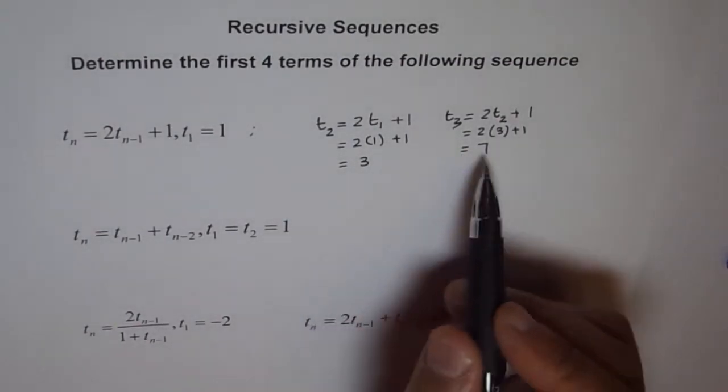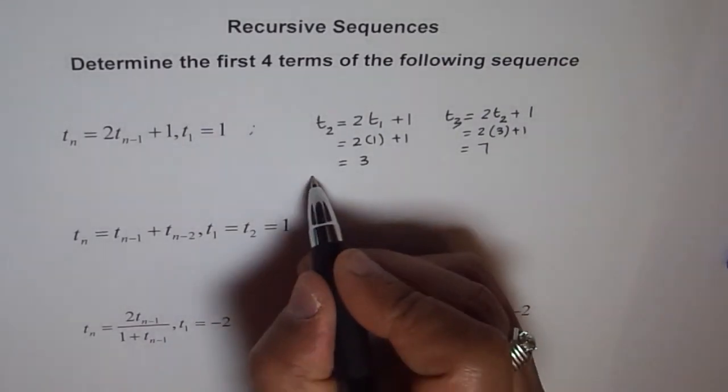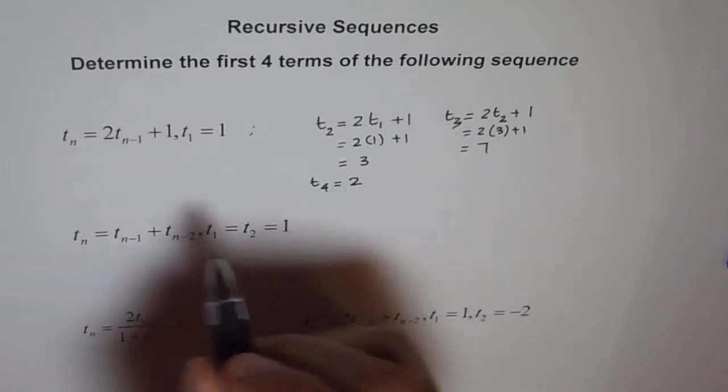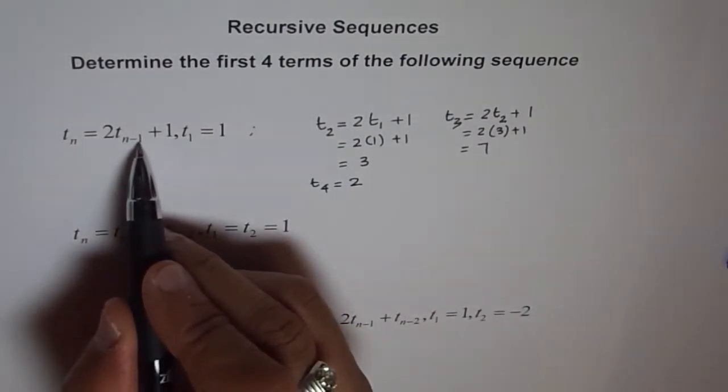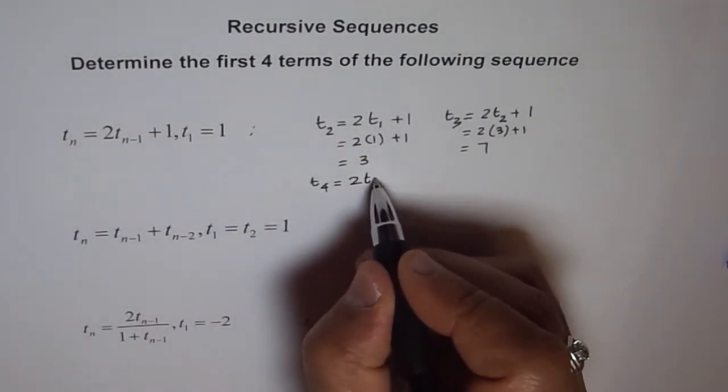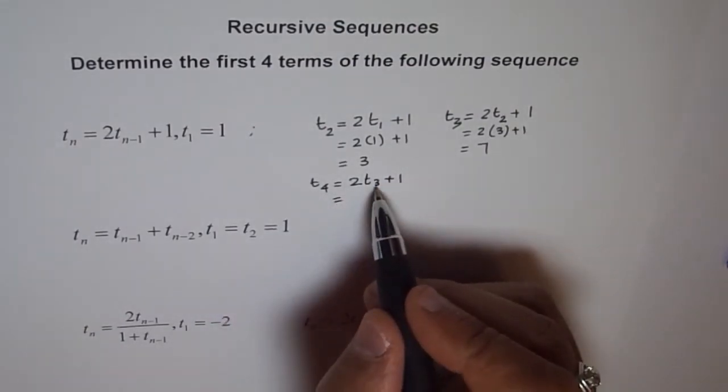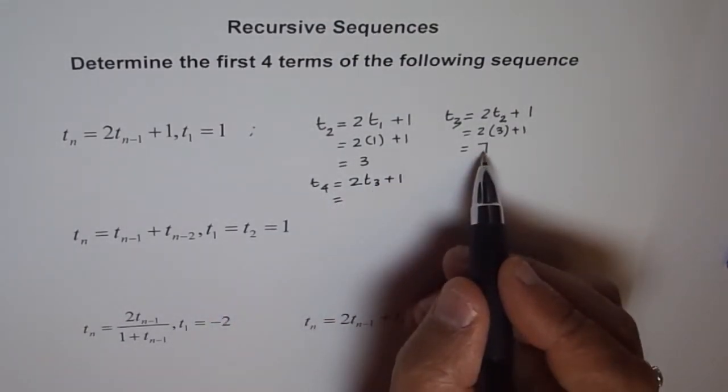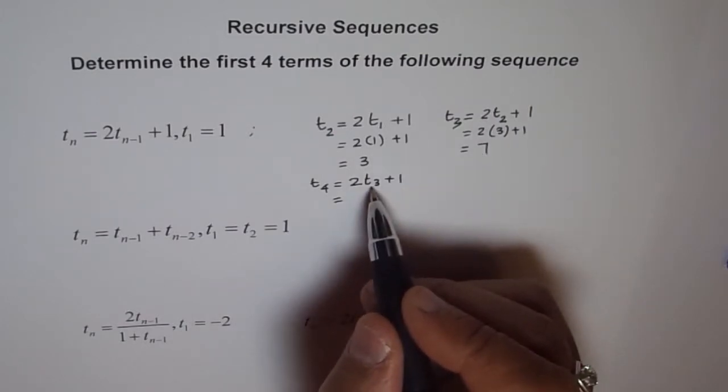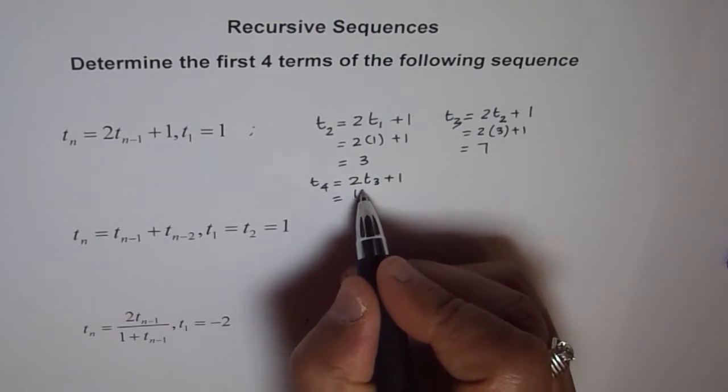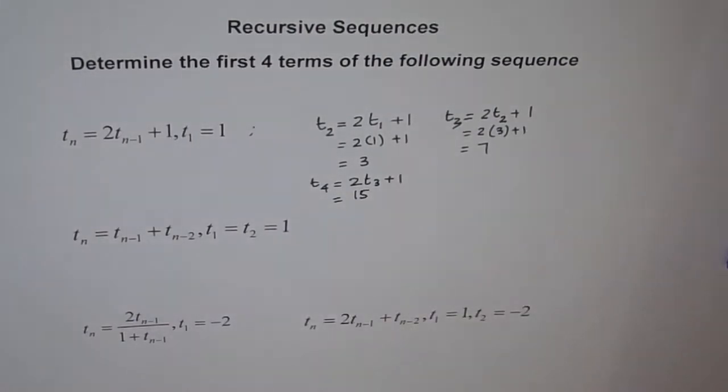So for T4, we say T4 is 2 times T4-1, which is T3, plus 1. What is T3 for us? T3 is 7. So we will plug in 7 here. 7 times 2 is 14 and 14 plus 1 is 15. So we get T4 as 15.